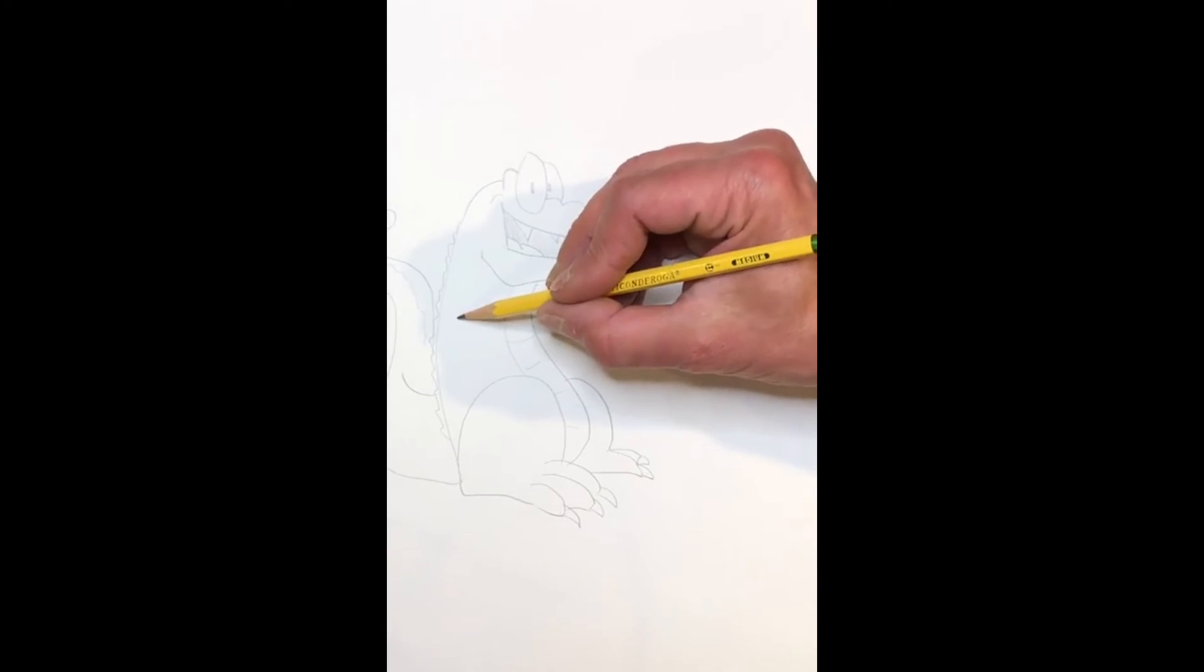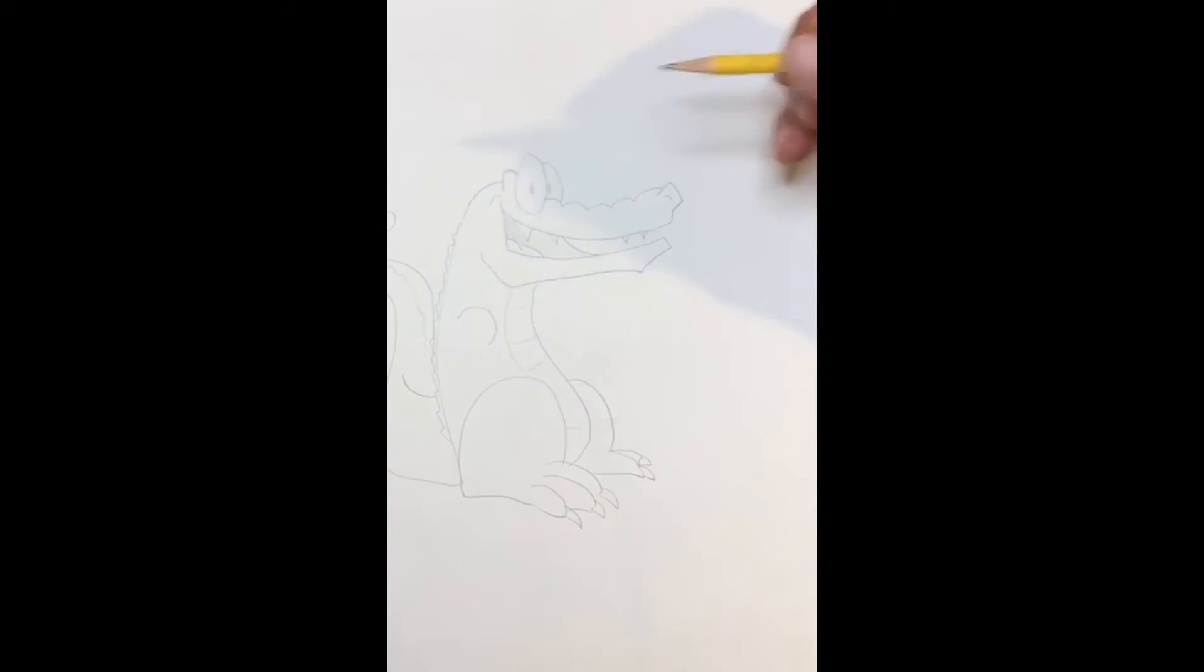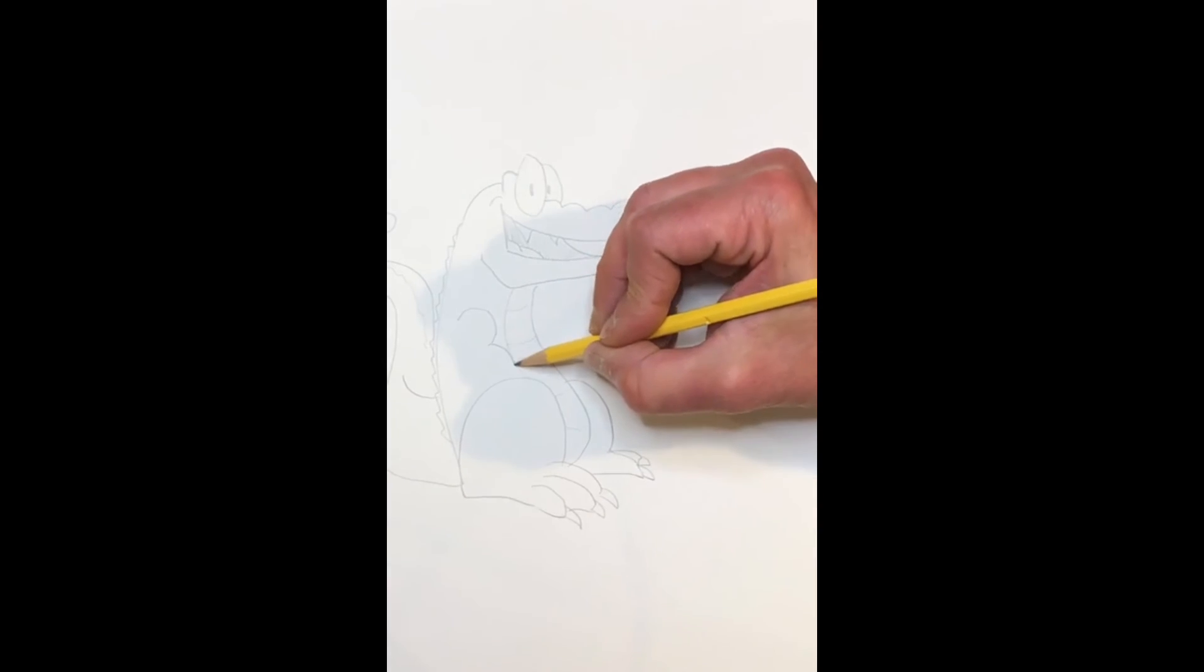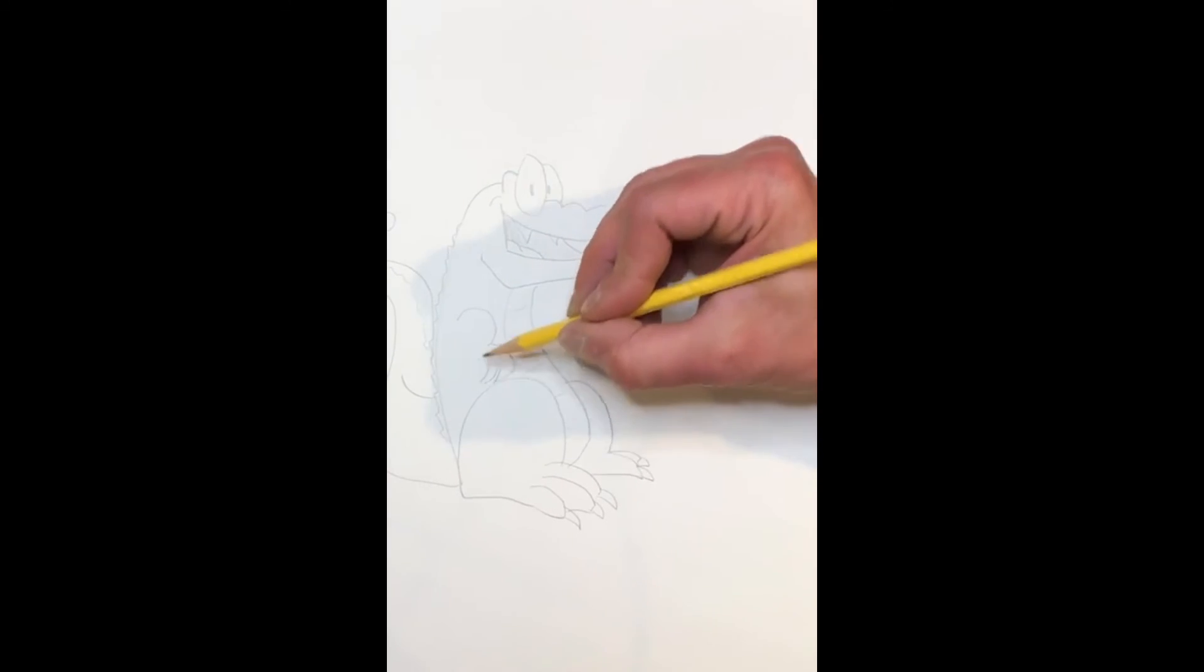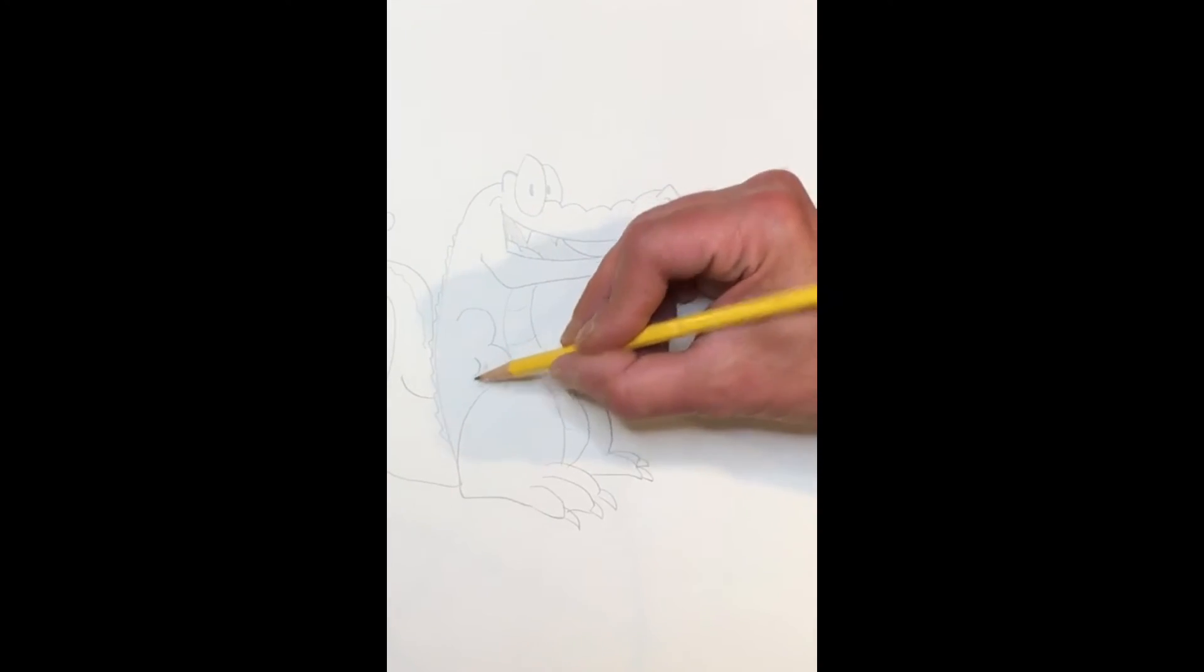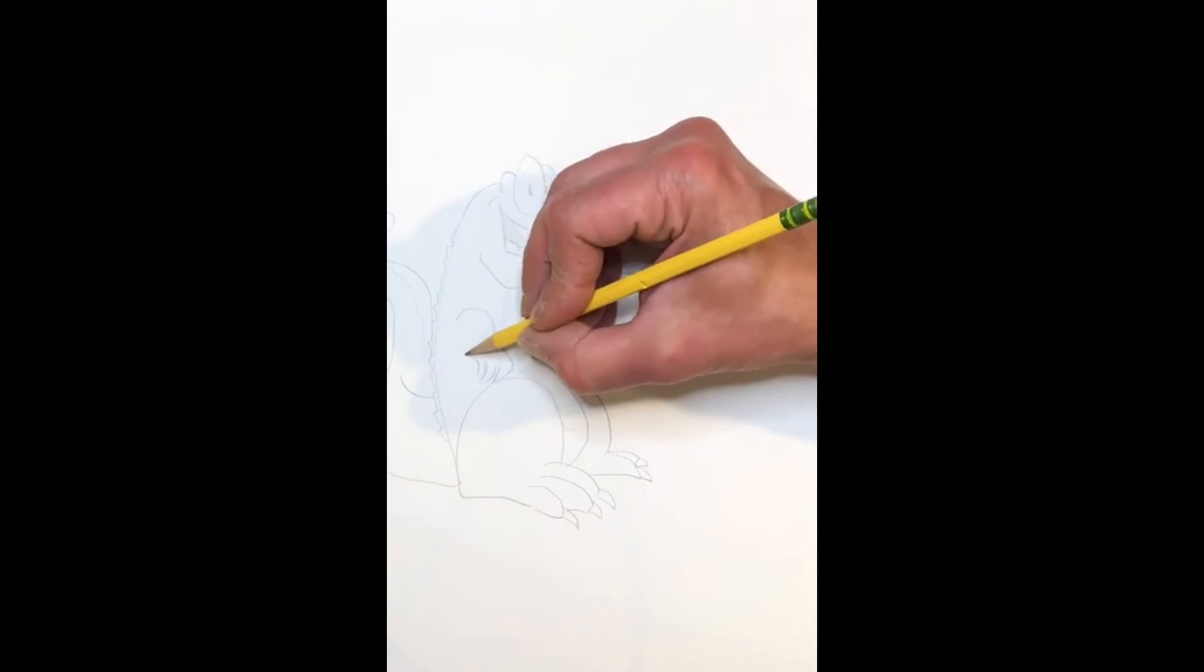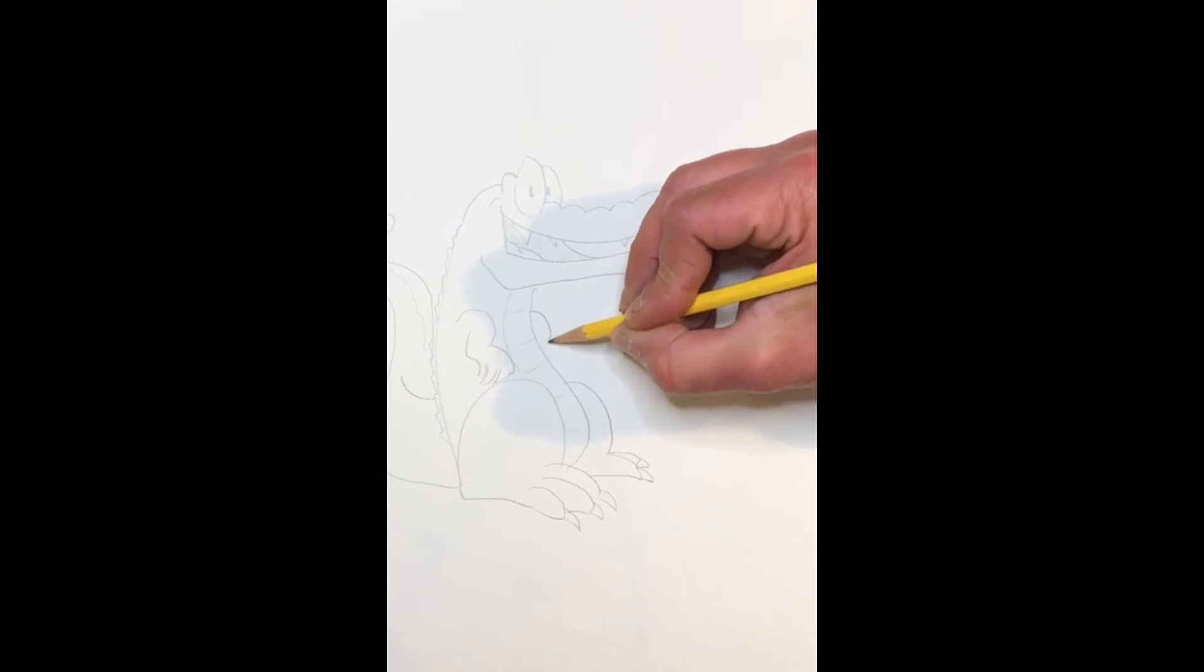All we're missing is his forearms, which are very short. They're not T-Rex short, but they're not as big as his back legs. Three little claws and back up to his arm. Giving a matching arm on this side with some claws.